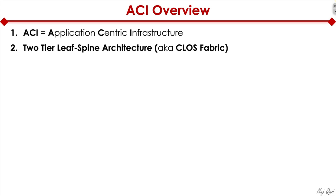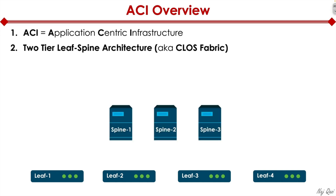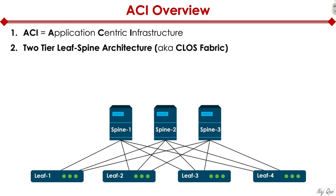In the two-tier leaf-spine architecture, at the bottom of the network we have leaf switches — in this example, four leaf switches — and we also have spine switches, in this instance three spine switches. The way these switches are interconnected is key: none of the spines are directly connected with each other, and none of the leafs are directly connected with each other. Instead, all leaf switches connect with all spines, and all spines connect with all leafs.